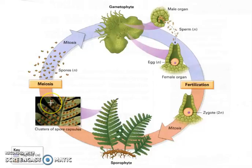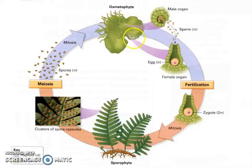Inside each one is just a cluster of spores — little baby ferns, you might say. And they'll release, the wind will carry them, they'll land somewhere in the forest, and they will grow into this unique little thing called a gametophyte stage.